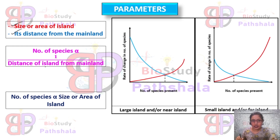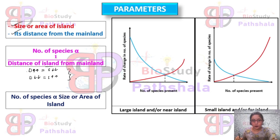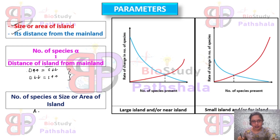The distance of the island from the mainland is inversely related with the number of species — that means if the distance is high, the number of species will be low, and if the distance is low from the mainland, the number of species will be high. The size or area of the island is proportionately related with the number of species — if area is high, species richness will also be high, and if area is low, species richness will be low.